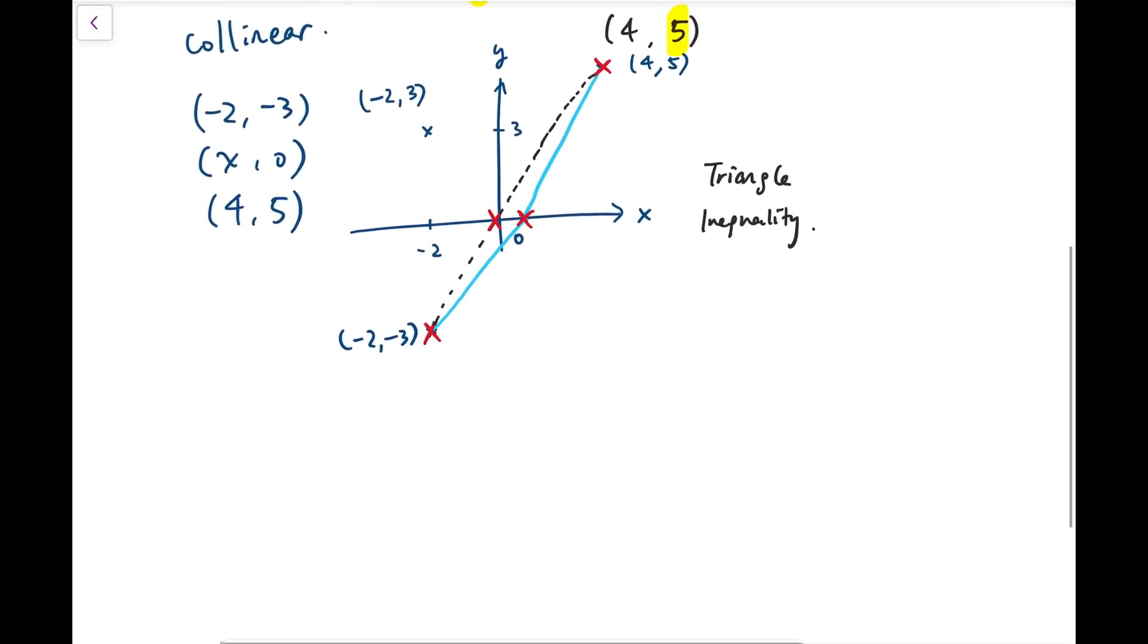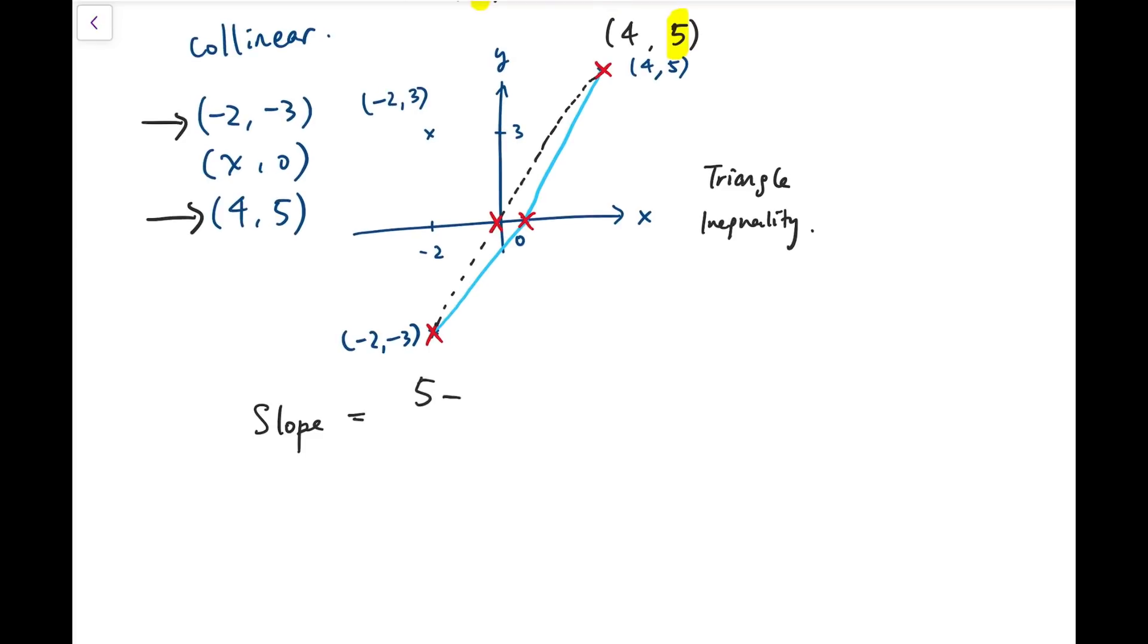And that should be much easier than calculus. So let's see what answer we get for the x. The first thing that we need to do is to find the equation of a straight line formed by joining the two points that we've already known, minus 2 minus 3 and 4 5. So the slope or the gradient of these two points should be 5 minus negative 3 divided by 4 minus negative 2. And that is 4 over 3.